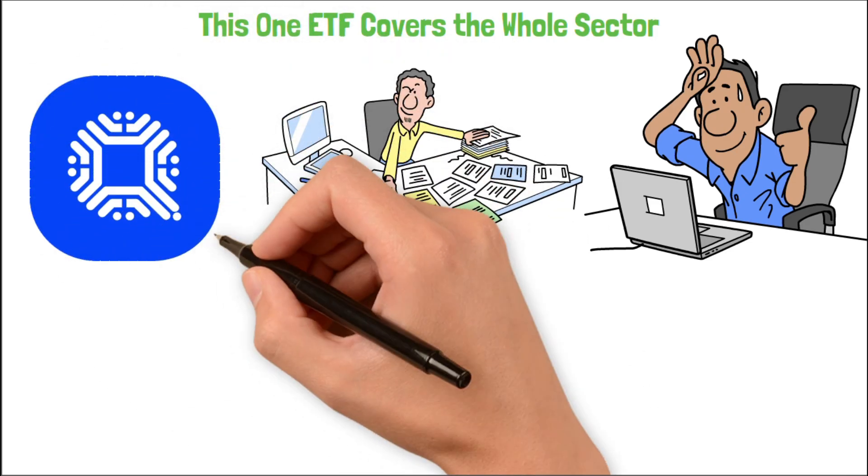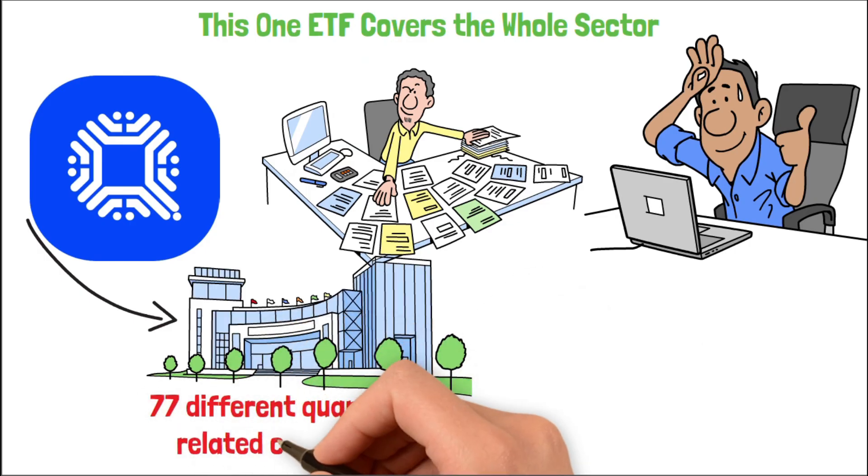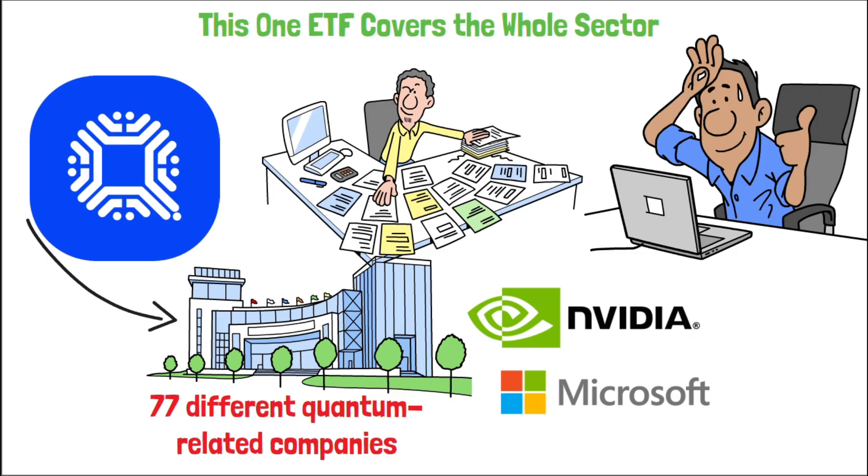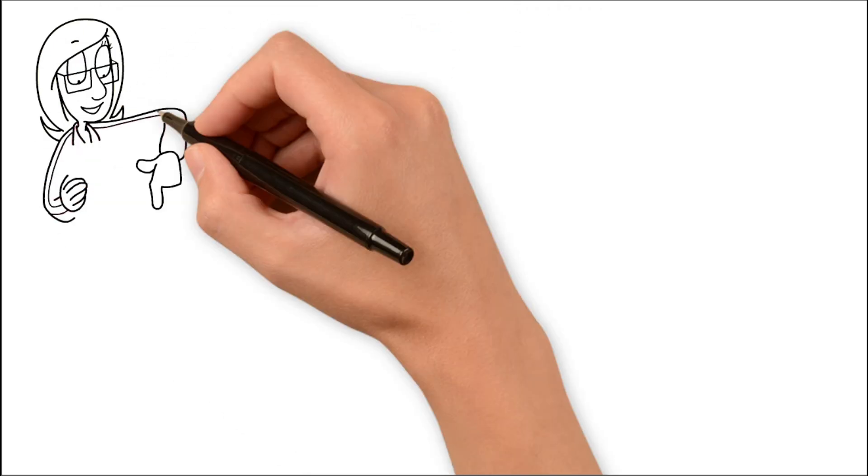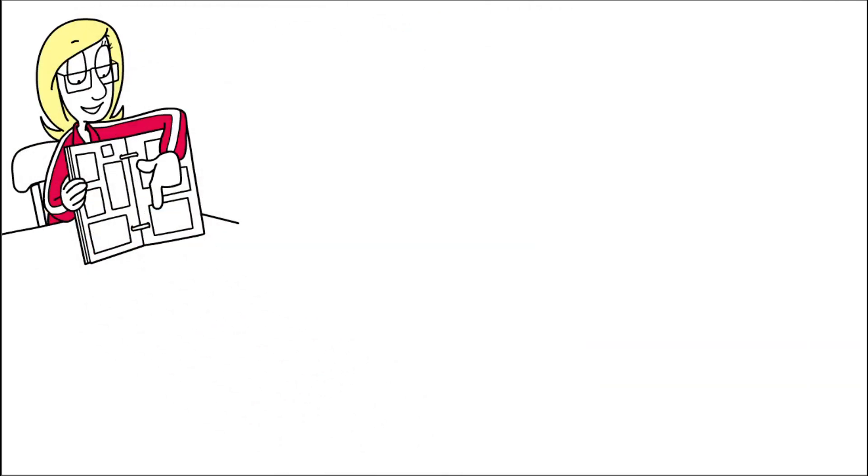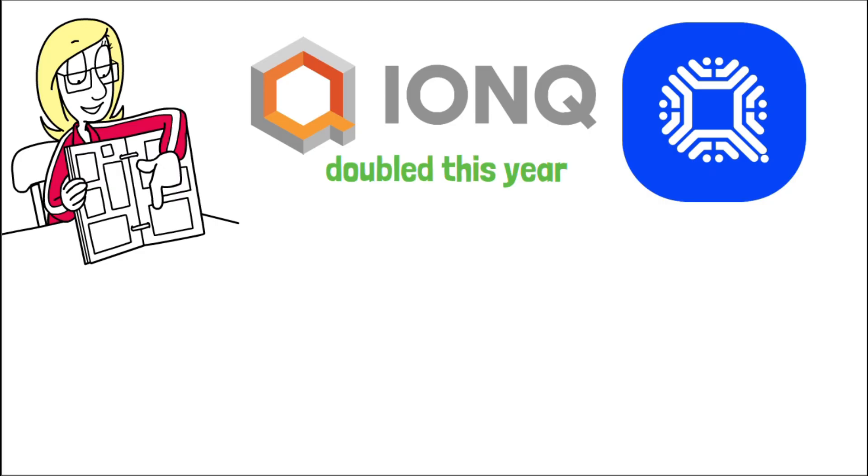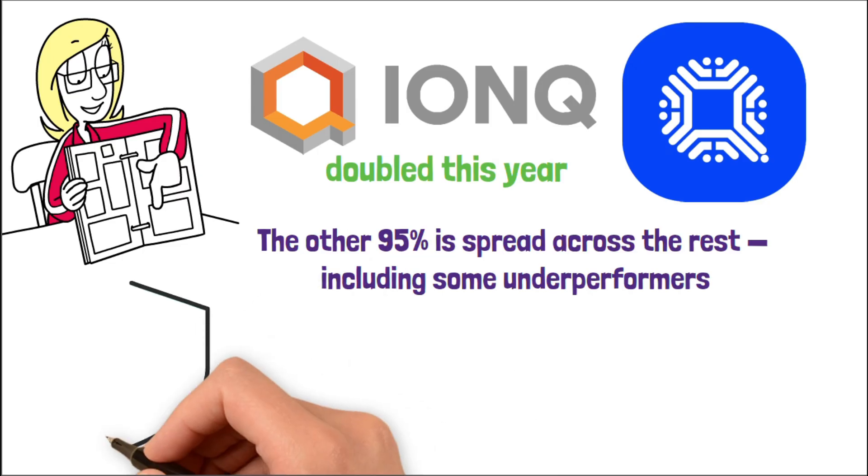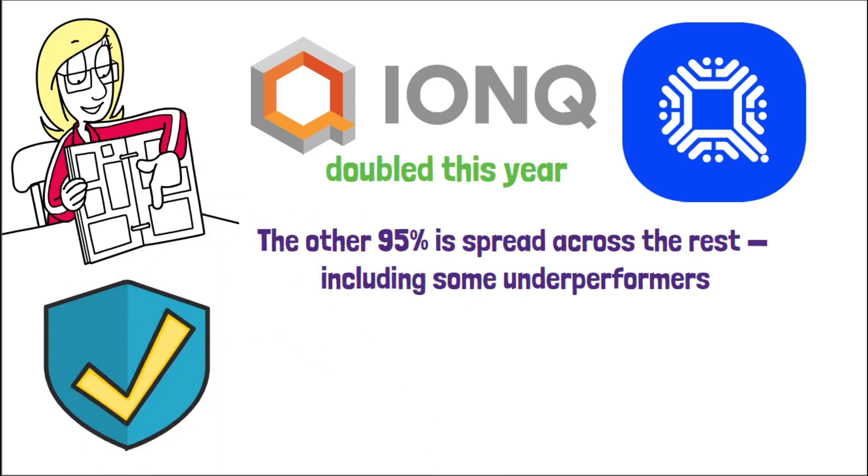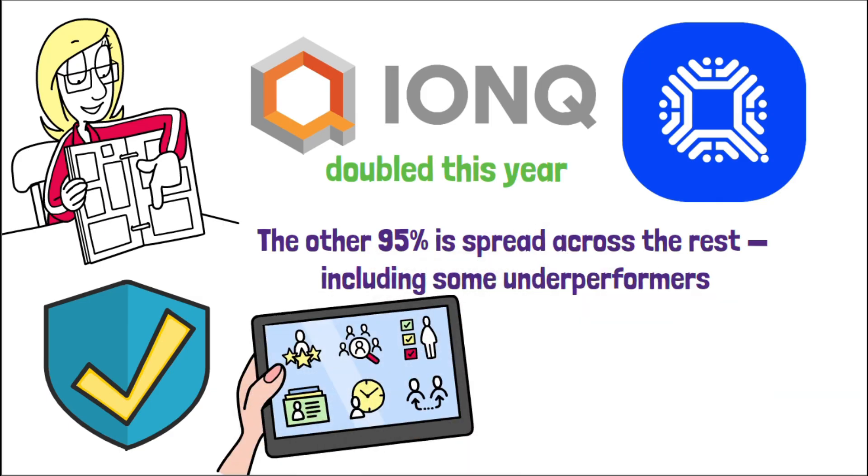It's called QTUM, the Defiance Quantum ETF. One ticker gives you exposure to about 77 different quantum-related companies. From NVIDIA and Microsoft to smaller names like IonQ and Rigetti, it's all wrapped into one diversified package. So here's the trade-off. You're getting lower risk because no single company can tank your position, but also lower upside. For example, when IonQ nearly doubled this year, QTUM only got a small bump because it only holds about 5% in IonQ. The other 95% is spread across the rest, including some underperformers. So QTUM works if you want exposure without the stress. It's a way to track the industry trend without trying to pick winners. But if you're aiming for real outperformance, you might miss the biggest returns.